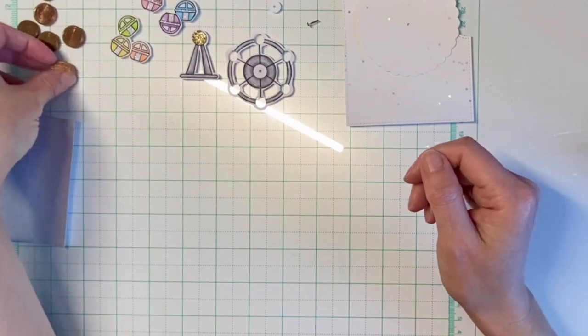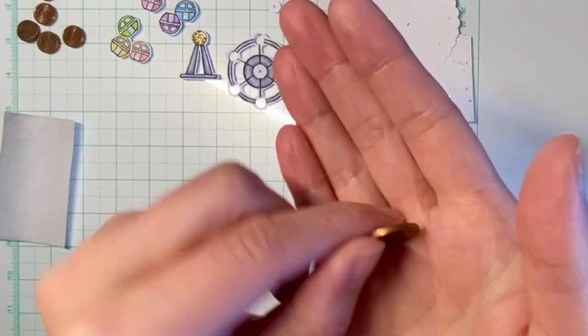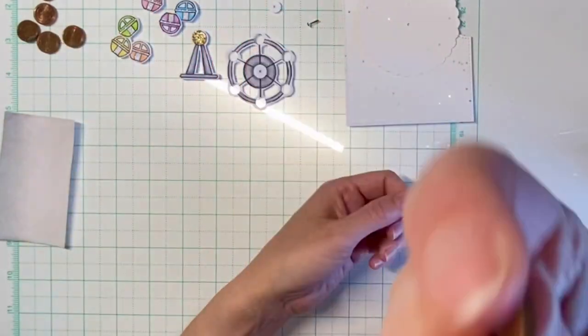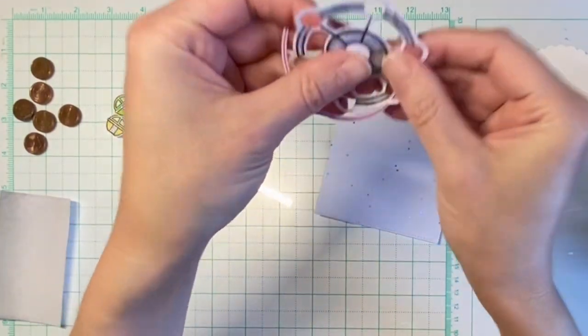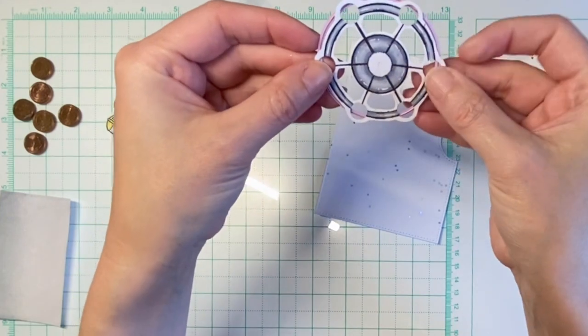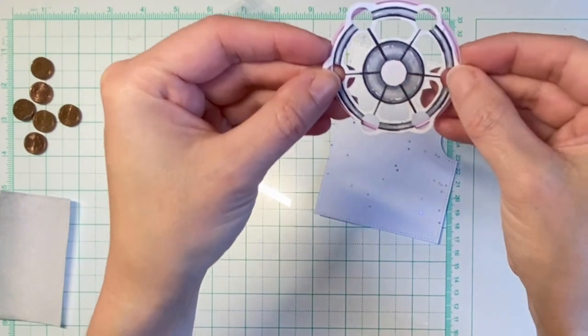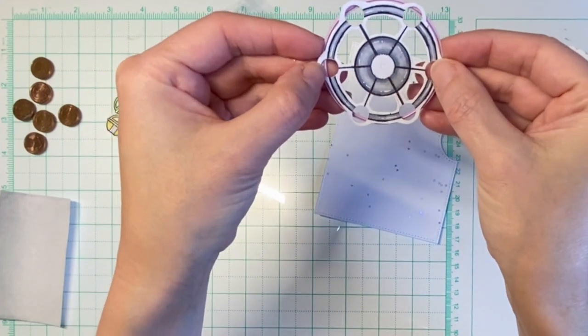And the next thing we need is pennies, so one per gondola, so six in total. For the mechanism I need a circular opening in my base panel that is about the size of the ferris wheel.